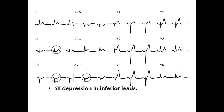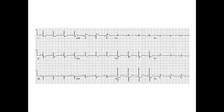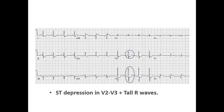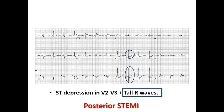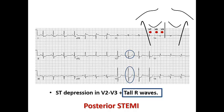Here, the patient has ST depression in inferior leads but ST elevation in lateral leads — so it is high lateral STEMI. In another ECG we can see ST depression in V2 and V3 with a tall R-wave and possibly prolonged R-wave duration — this is posterior STEMI, not non-ST. Performing posterior ECG leads would show ST elevation of ≥0.5 mm.